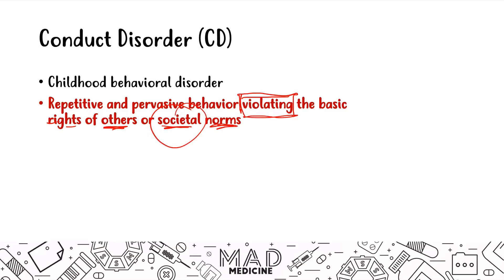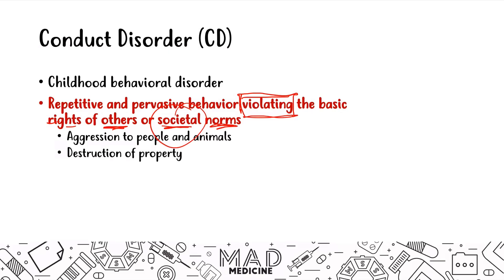This could also be a very argumentative and lying kid who likes to steal as well. This patient could present with aggression to people and animals. In the case, you may see a kid who likes to destroy property and they might be into arson and lighting things on fire. That's a really big red flag that should point you towards conduct disorder. Arson — that's definitely one of them.